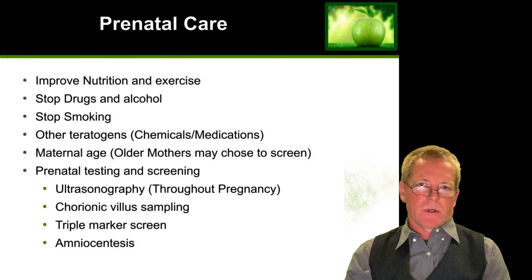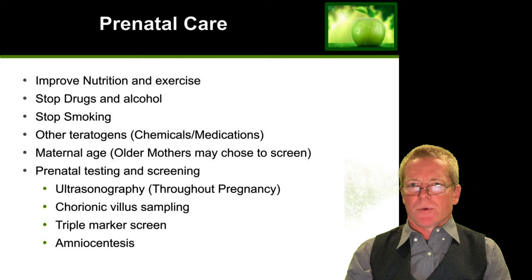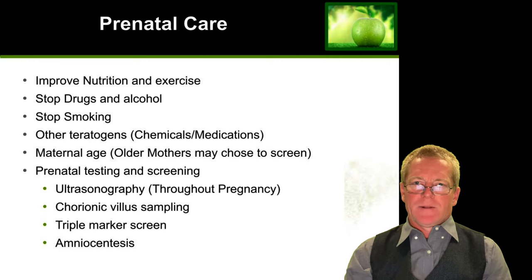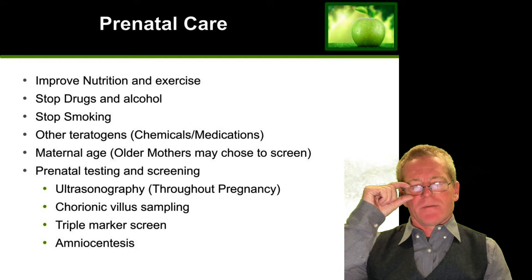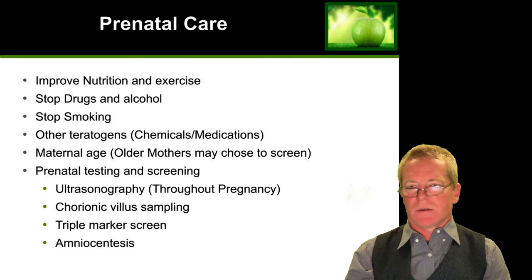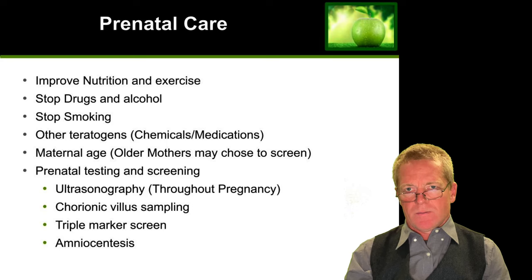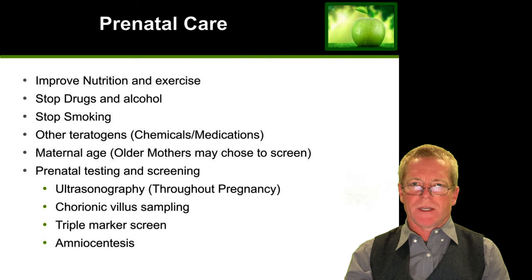Maternal age is a consideration — some older mothers may wish to have their fetus screened for genetic conditions. Prenatal testing usually involves ultrasound throughout the pregnancy to make sure the pregnancy is proceeding as planned. Today's ultrasound machines are astonishing in terms of providing a detailed view of the developing fetus. There is chorionic villus sampling for genetic sampling, along with triple marker screening looking for typical genetic abnormalities that occur as women and fathers age. Amniocentesis is another method, where amniotic fluid is taken from around the developing fetus to check for genetic abnormalities.